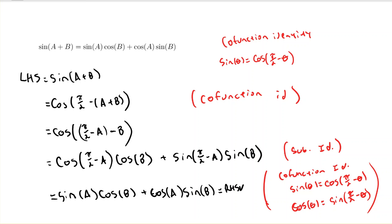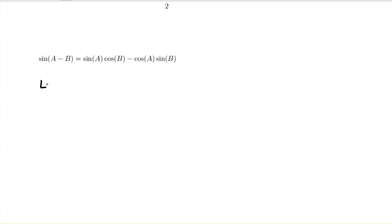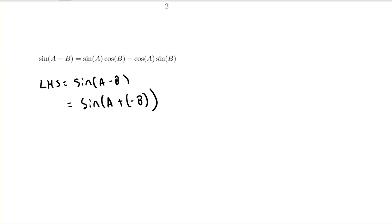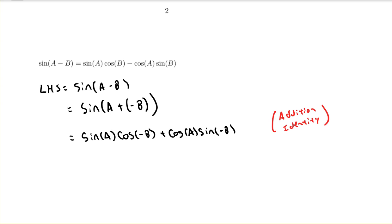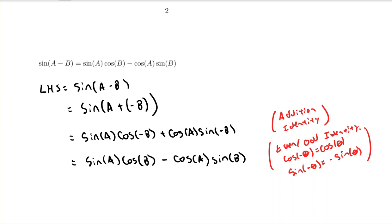Now that we have the addition formula for sine, we can find the subtraction formula as well using the same trick. Starting with sine of A minus B, I rewrite it as sine of A plus negative B so it fits my addition formula. Applying the addition formula gives me the following. Again I have negatives inside trig functions — I apply even and odd identities: I ignore the negative inside cosine by the even identity, and pull the negative out from inside sine by the odd identity, leaving me with the right-hand side, proving the sine subtraction formula.